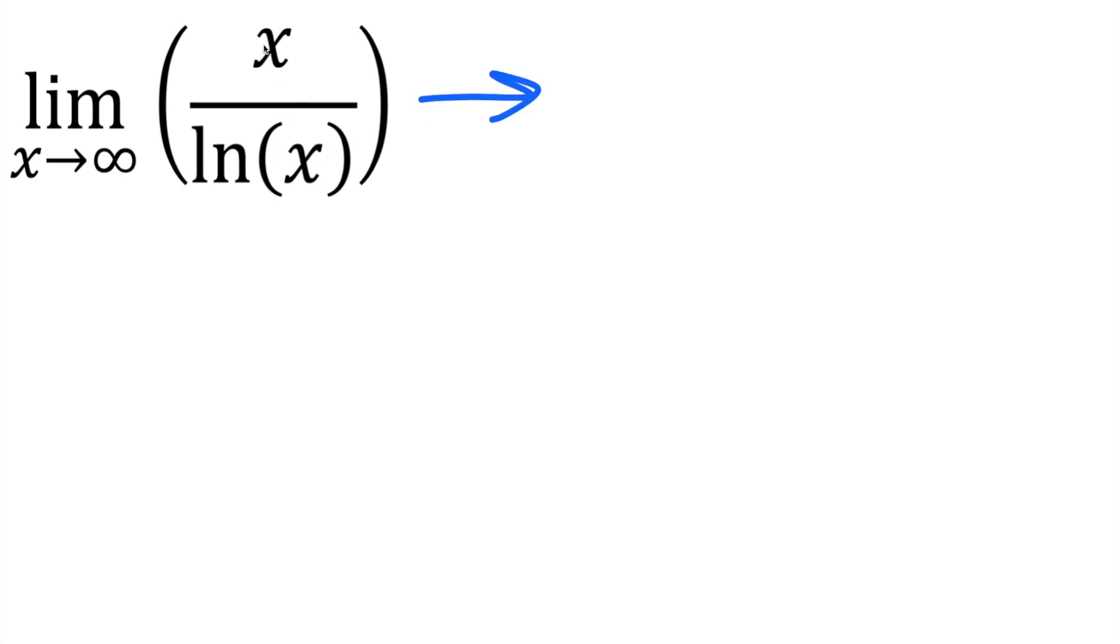So if we did that, the numerator is infinity and the denominator is ln of infinity, which is also going to give us infinity. So we get infinity divided by infinity, and infinity divided by infinity is a big red flag that we have to approach this problem differently.